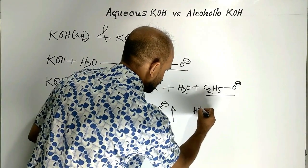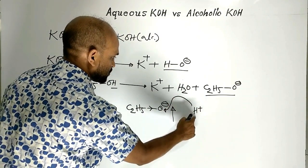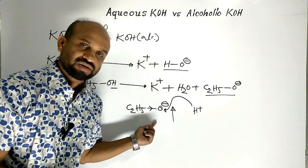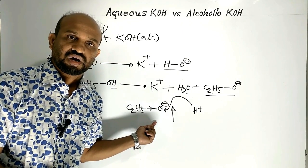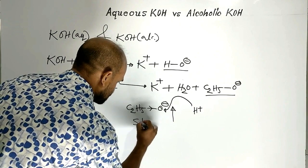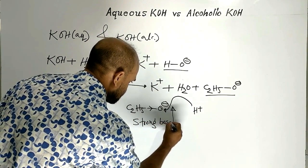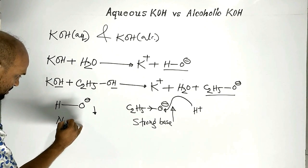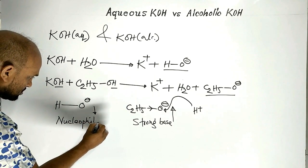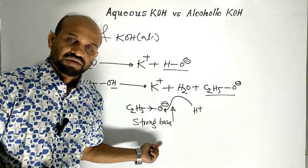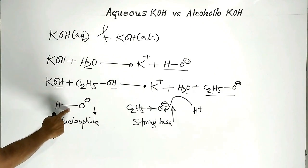Because of this, ethoxide ion has a great tendency to receive a proton due to the higher electron density over oxygen — meaning it acts as a strong base according to the Brønsted-Lowry protonic concept. So, because of the presence of the alkyl group, ethoxide ion acts as a strong base. Hydroxide ion, on the other hand, simply acts as a nucleophile during reaction with alkyl halide.